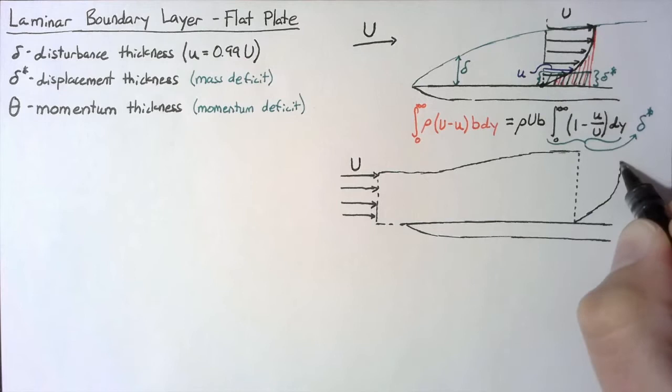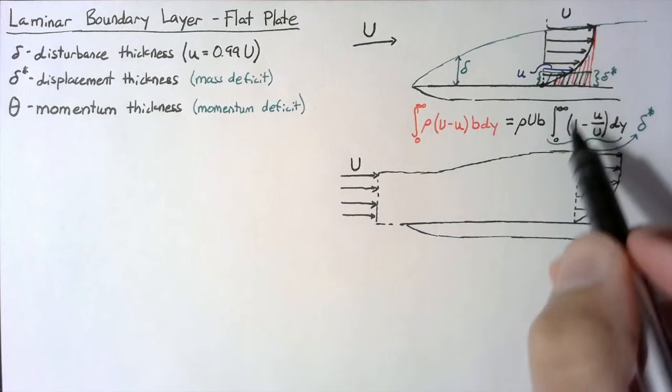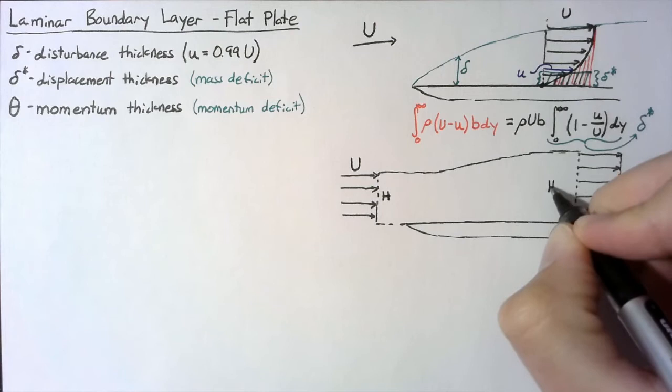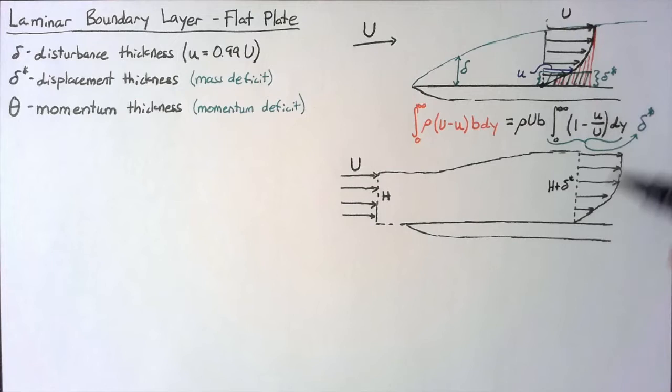On the right hand side, we're going to have a boundary layer. The other trick here is that we're not going to be integrating all the way to infinity — we're actually only going to be integrating as far as a distance h on the left hand side. On the right hand side, the amount that we need to integrate is actually h plus delta star, because we've included the effects of this mass deficit. We need to go a little bit higher so we include the amount of mass that we need.